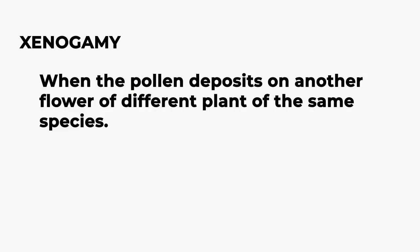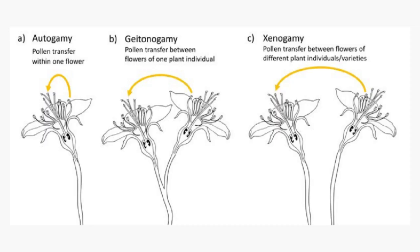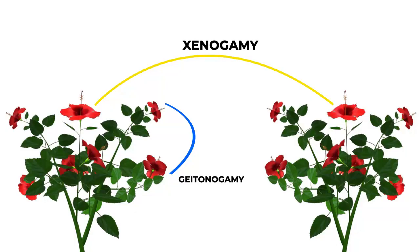The next one is xenogamy. When pollen deposits on another flower of a different plant of the same species, it is called xenogamy. For example, in hibiscus plant, pollen from one hibiscus plant deposits on another hibiscus plant. These flowers are genetically different.